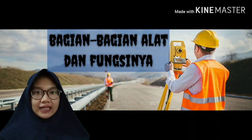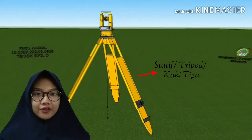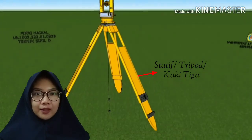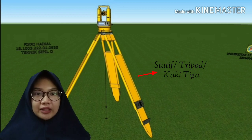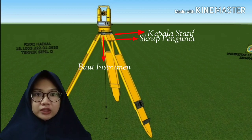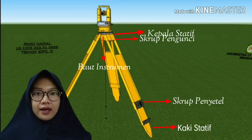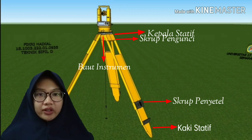Selanjutnya kita melangkah pada bagian-bagian alat dan fungsinya. Yang pertama adalah statif. Statif biasa juga dikenal dengan tripod atau kaki tiga. Statif ini berfungsi sebagai penunjang pesawat teodolit. Statif terdiri dari kepala statif, baut instrumen, skrup pengunci, skrup penyetel, dan kaki statif. Kepala statif berfungsi sebagai tempat dudukan dari pesawat teodolit.